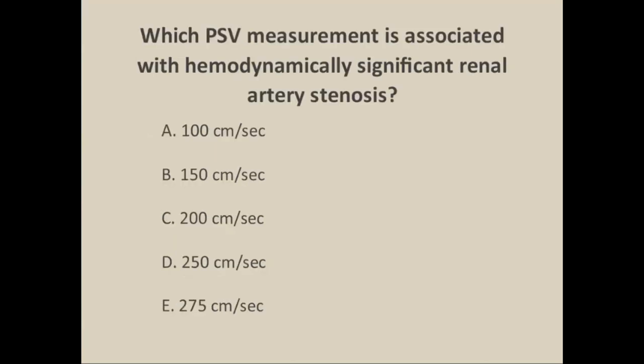Our next question: which peak systolic velocity measurement is associated with a hemodynamically significant renal artery stenosis? The answer is 200 centimeters per second. If it's over that threshold, you would consider it a significant stenosis.